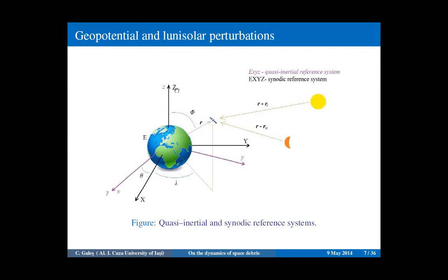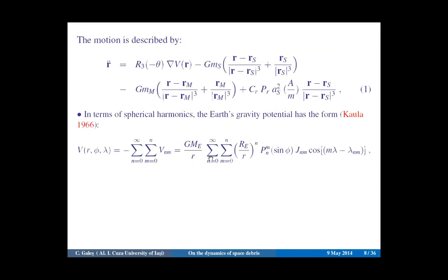We refer the motion to a fixed quasi-inertial reference system where the XY plane is the equatorial plane. We will also use another frame, a synodic one rotating with the Earth. Clearly, theta is the sidereal time. The motion is described by this vectorial differential equation, where V stands for the Earth's gravitational potential, and other terms are the contributions from the Sun, Moon, and solar radiation pressure.